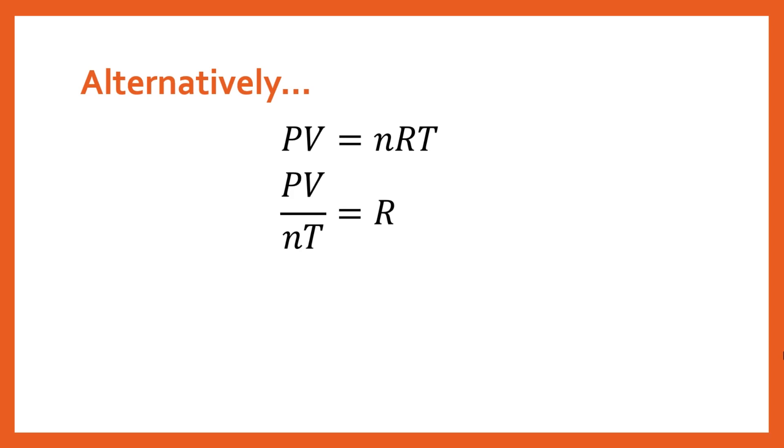So what this is saying is that if you take the pressure of the gas times the volume of the gas divide by n, which is the number of moles, and multiply that by the temperature of the gas, every single time you do that for an ideal gas, you will get the gas constant. So in other words, this whole expression is equal to a constant value.